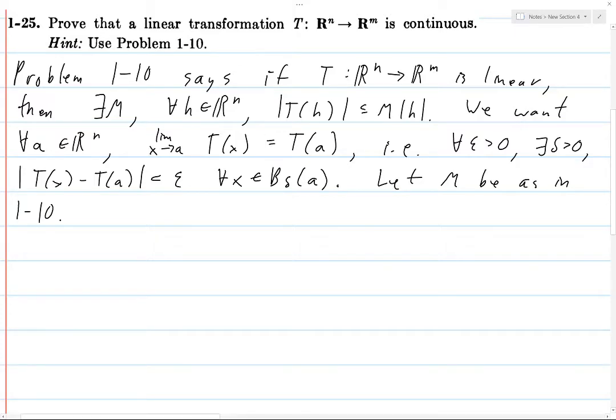Okay, so given such an M, so suppose we're given an epsilon greater than zero, because we want to prove that for all epsilon there exists a delta.